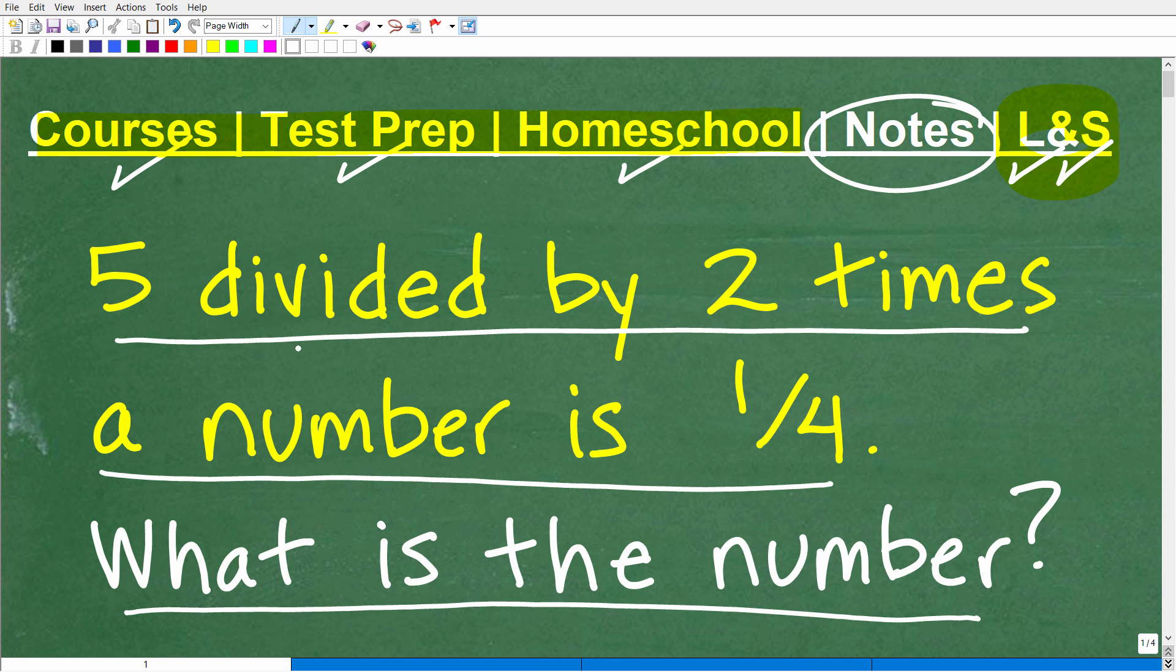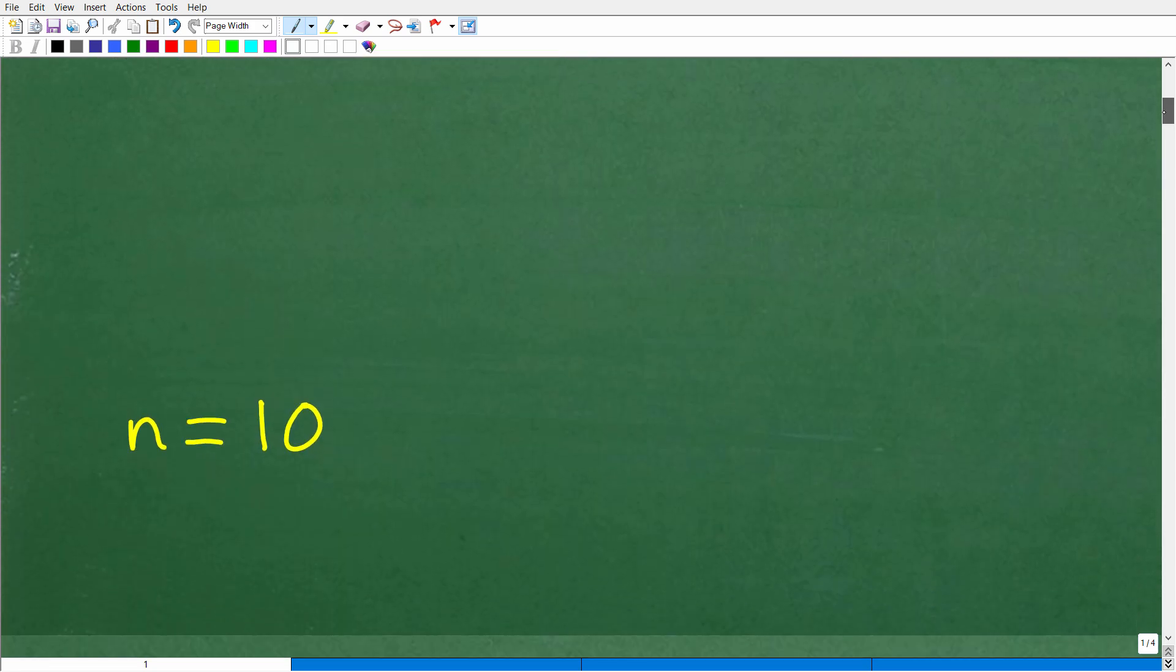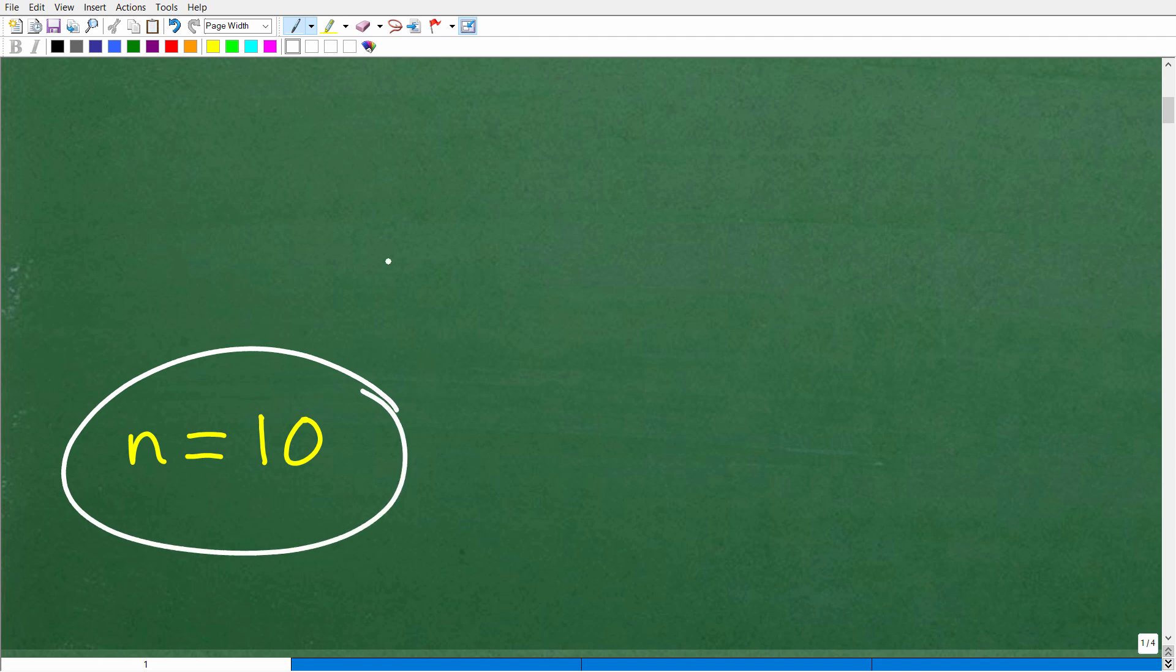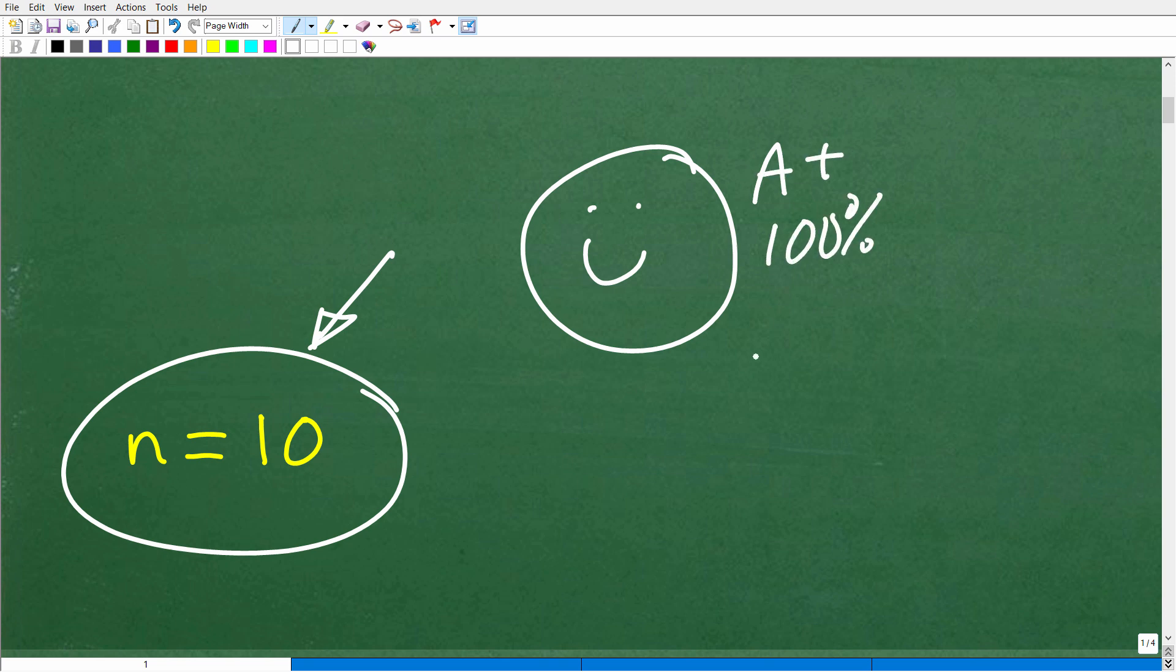Again, it is 5 divided by 2 times a number is 1 fourth. What is this number? Well, let's go ahead and show you the number right now. Okay, the number is 10. So that is the answer. Okay, so how did you do? Well, hopefully you got this right. And if you did get this right, let's celebrate by giving you a nice little happy face and A plus, a 100% and multiple stars. So you can share with your friends and family how awesome you were in math today. Okay, so nice job. But if you didn't get this right, do not despair because we're going to walk through the steps one by one.